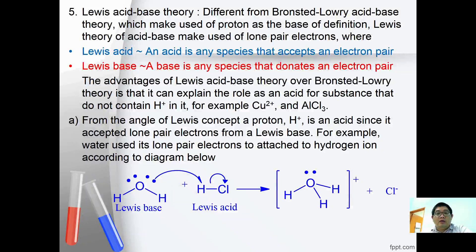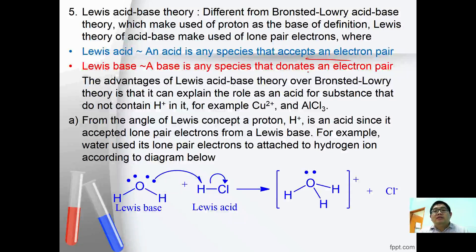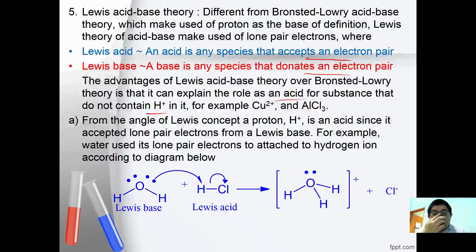The next theory is Lewis acid-base theory. Different from Bronsted-Lowry acid-base theory which uses protons as the basis, Lewis theory makes use of lone pair electrons. Therefore, a Lewis acid is a substance that accepts an electron pair, whereas a Lewis base is a substance that donates an electron pair. The advantage of Lewis acid-base theory over Bronsted-Lowry theory is that it can explain the role of substances as acids even when they do not contain H+, for example CO2 and Al3+.